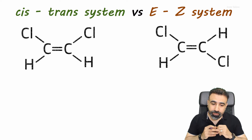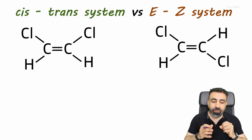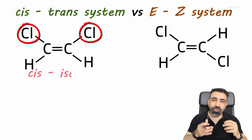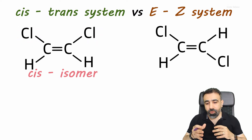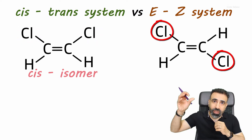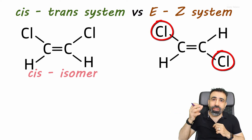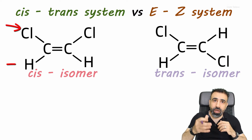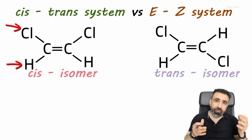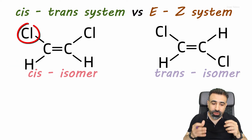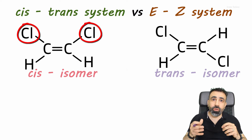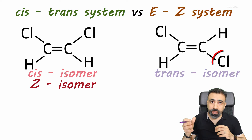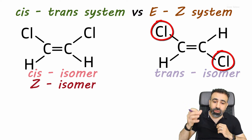Look at these two structures. In the one on the left, the two chlorine atoms are on the same side of the double bond, so using the cis-trans system it is called the cis-isomer. The other, with the two chlorines on opposite sides, is called the trans-isomer. Now applying the EZ system, chlorine has a higher atomic number than hydrogen. In the left structure the two higher-priority groups are on the same side, so it is the Z-isomer, while the right structure has them on opposite sides, so it is the E-isomer.